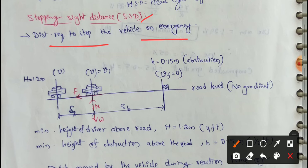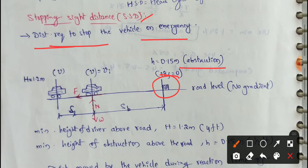So, if a vehicle is moving and there is an obstruction, we can stop the vehicle in an emergency. Why do we need this distance? If there is an obstruction, we need to stop within that distance. For example, if we choose the road level condition, we will discuss the stopping sight distance.